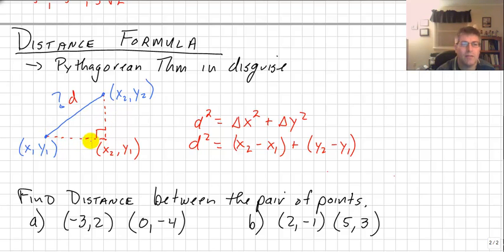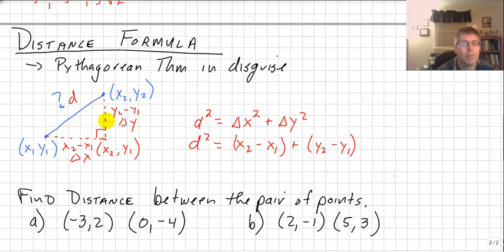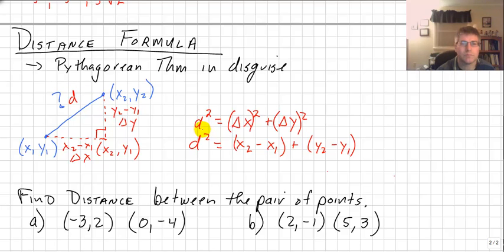If we've got a right triangle, we can do the Pythagorean theorem. The bottom side is our change in x, which is x2 minus x1, and the vertical side is our change in y, or y2 minus y1. Our change in x squared plus our change in y squared equals d squared. So d squared equals x2 minus x1 squared plus y2 minus y1 squared.